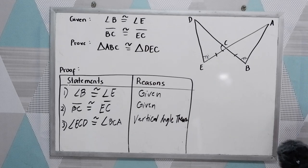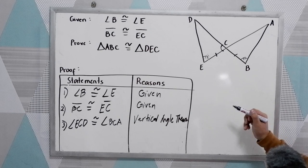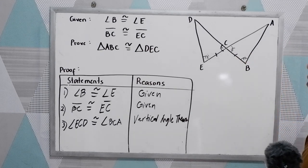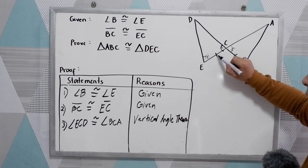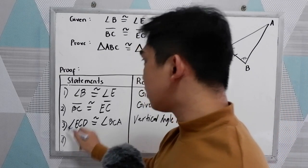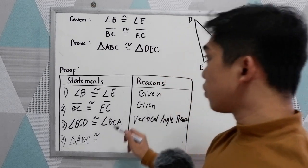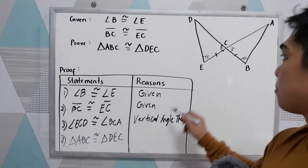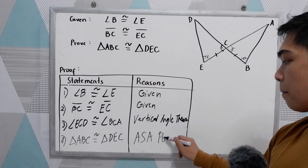By the vertical angle theorem, we can conclude that angle ECD is congruent to angle BCA. Now, studying our illustration, we have angle-side-angle. So we can now conclude that triangle ABC is congruent to triangle DEC. That is by the angle-side-angle postulate.